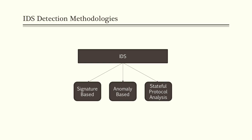How does IDS actually detect threats? There are three detection methodologies: signature-based, anomaly-based, and stateful protocol analysis. What does signature-based mean? It's actually a rule-based approach — we'll have a set of rules, and based on those rules the IDS will actually detect the vulnerabilities.